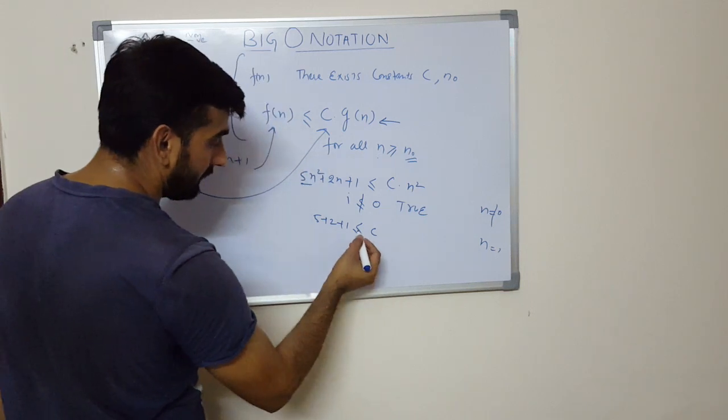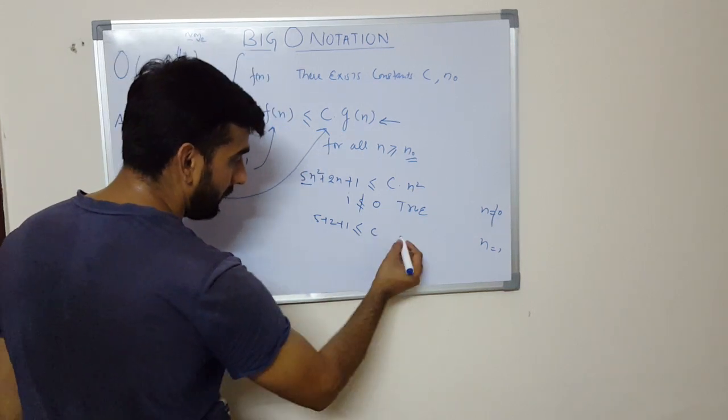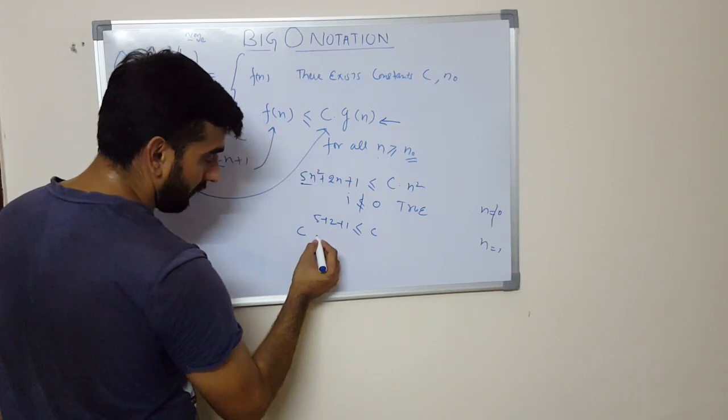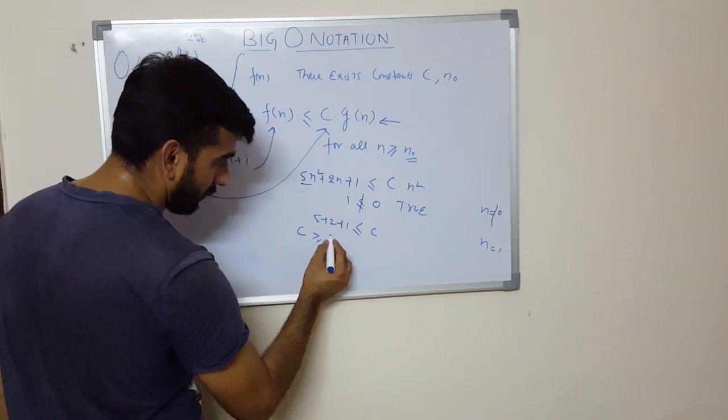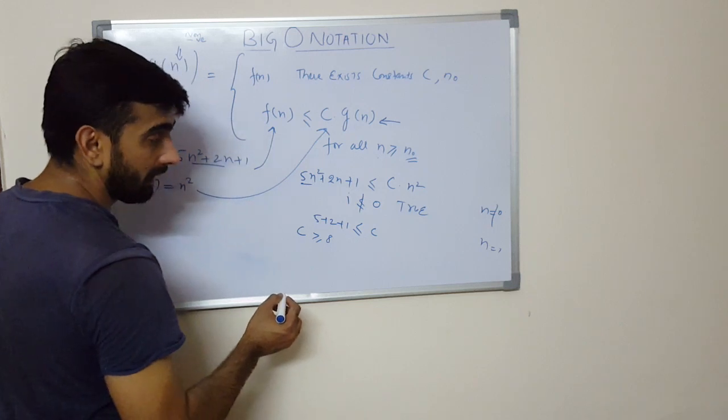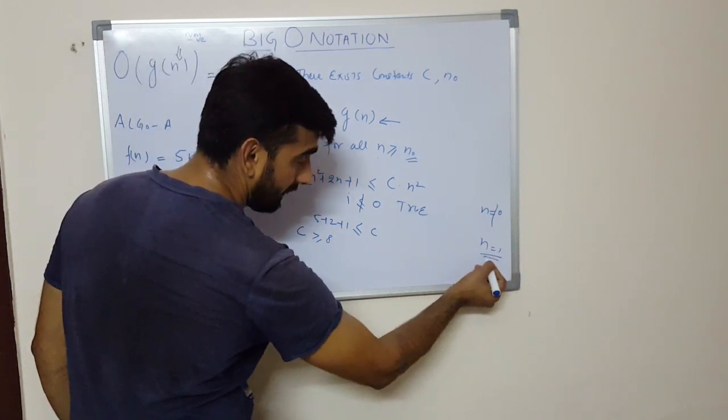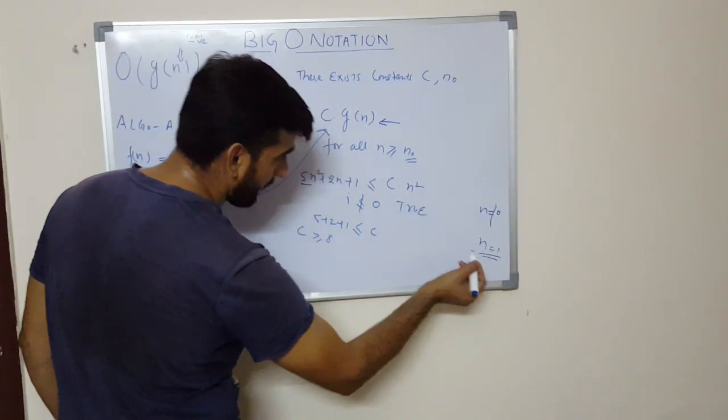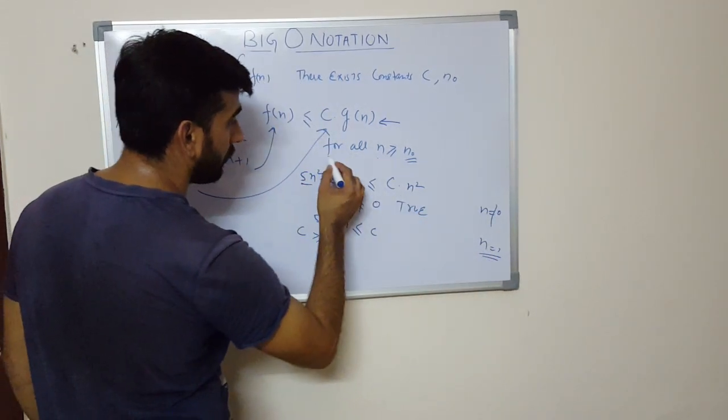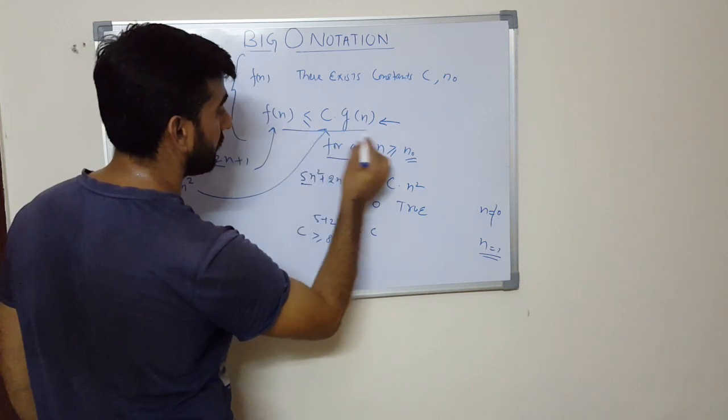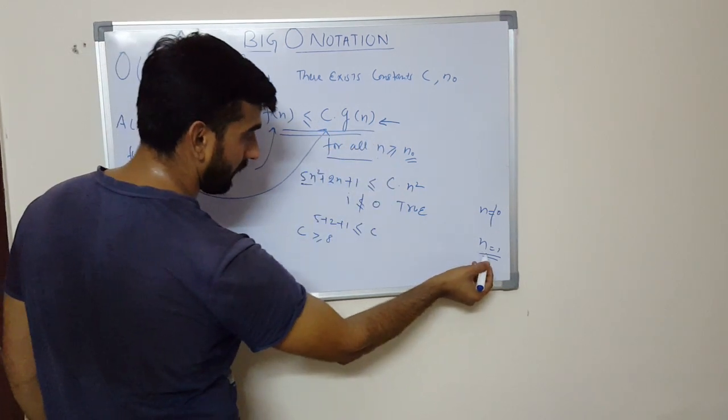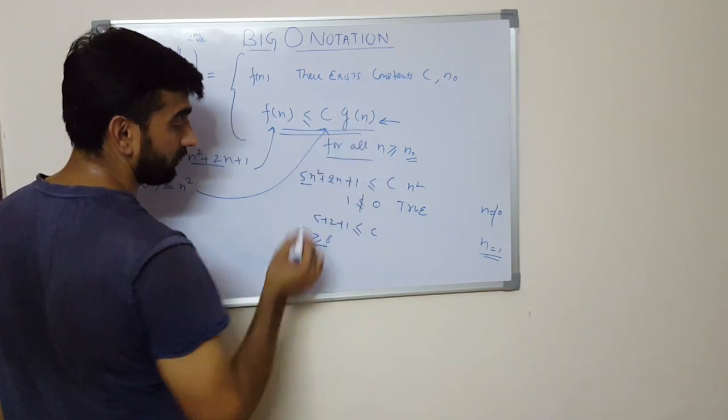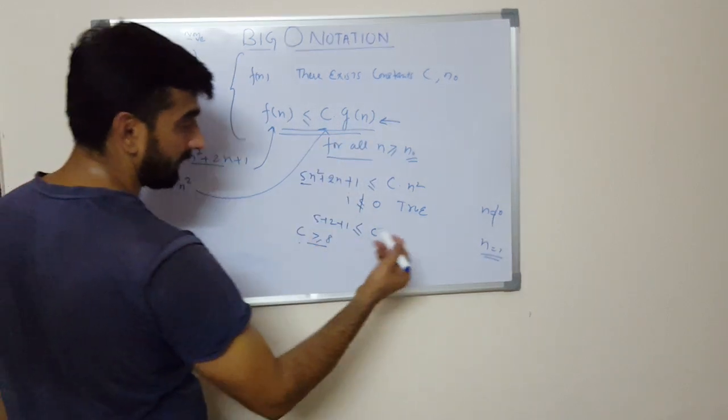So from here we can find that the value of c could be greater than or equal to 8 and for the value of n is equal to 1. So for this value of n, this statement holds true.